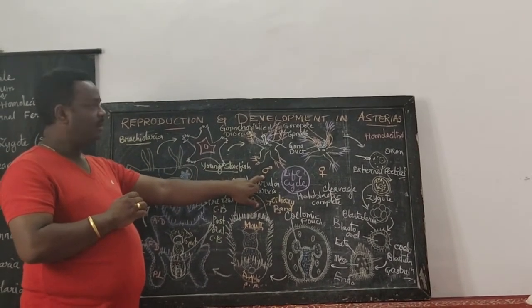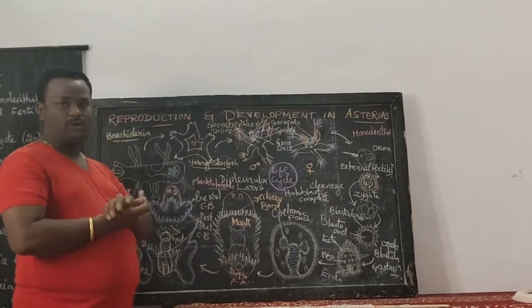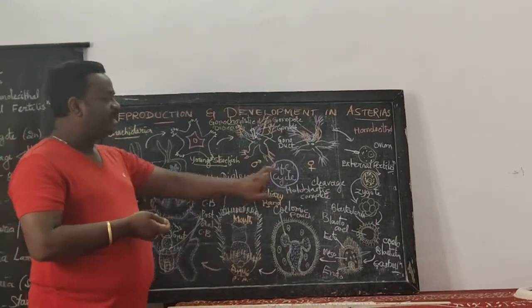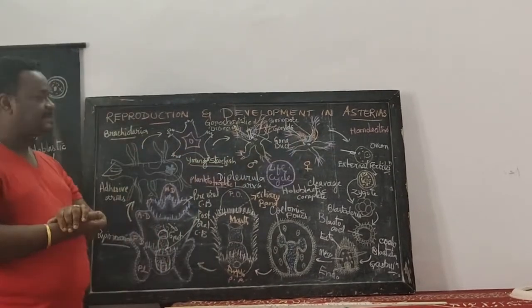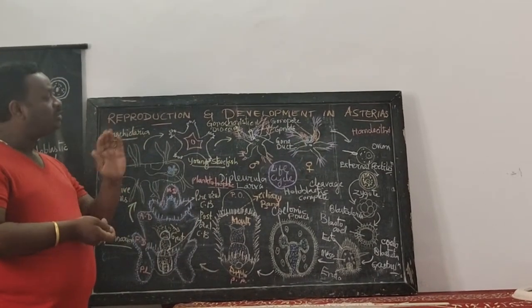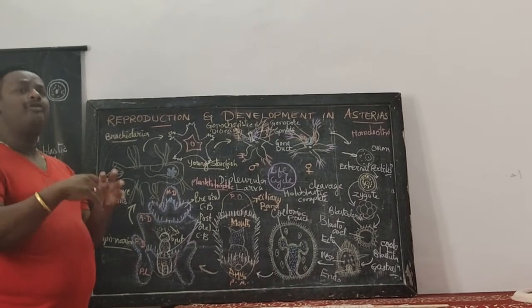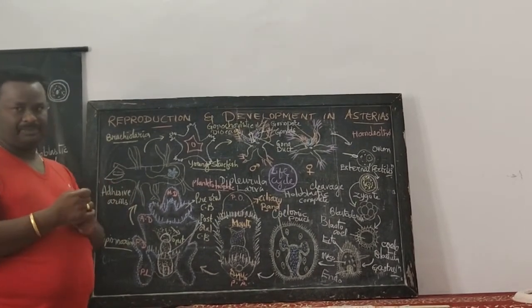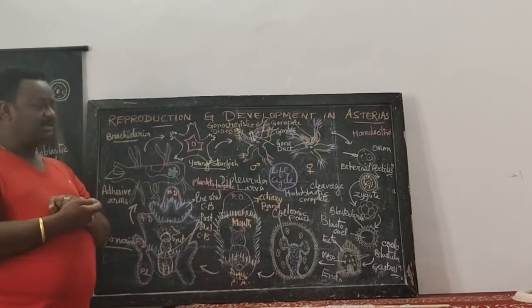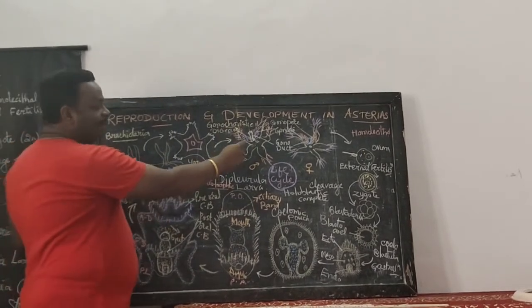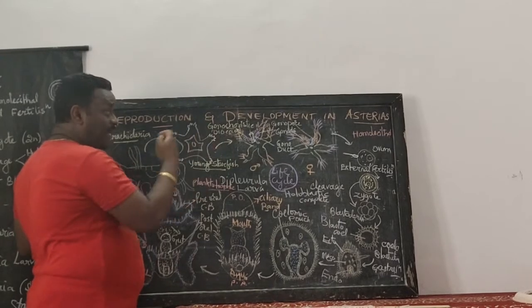Since they have only gonads, males will have the reproductive gonads called testis lobes, and females will have reproductive gonads called ovaries. Both testis and ovaries morphologically appear the same — each of these gonads appears to be like a bunch of grapes.